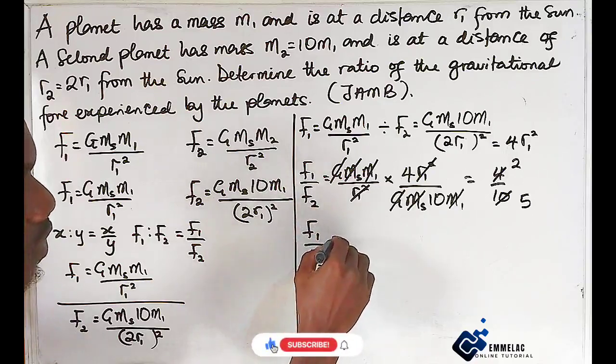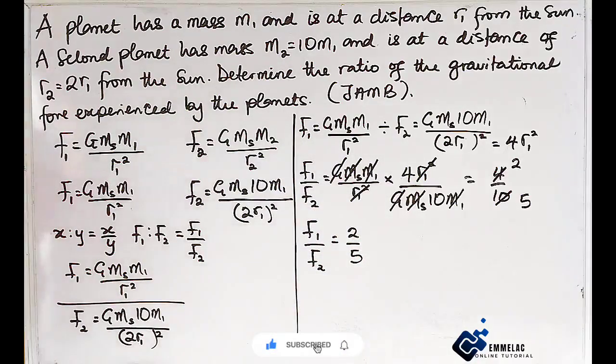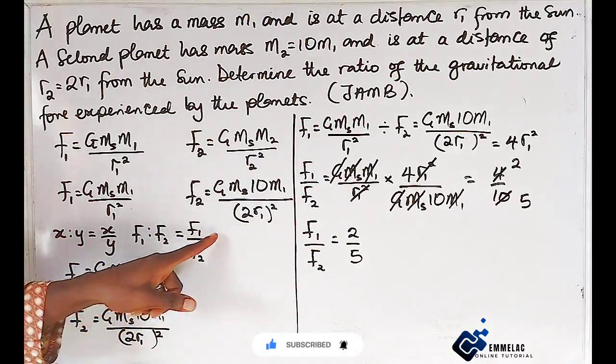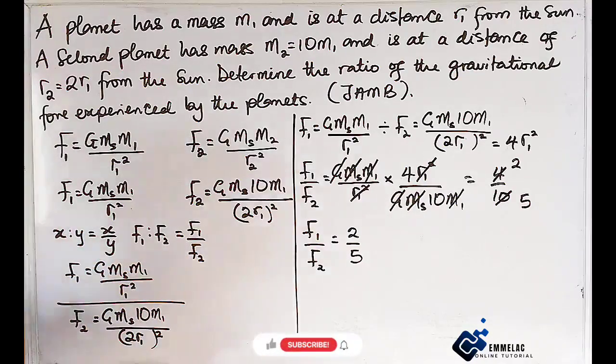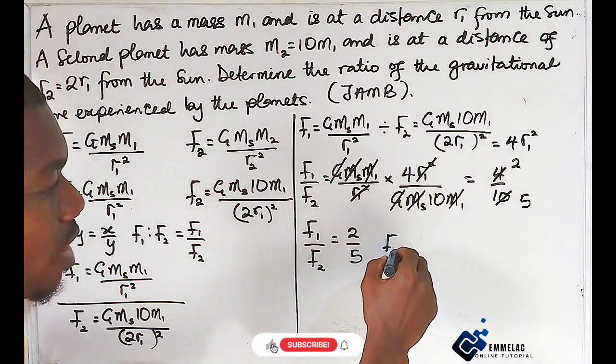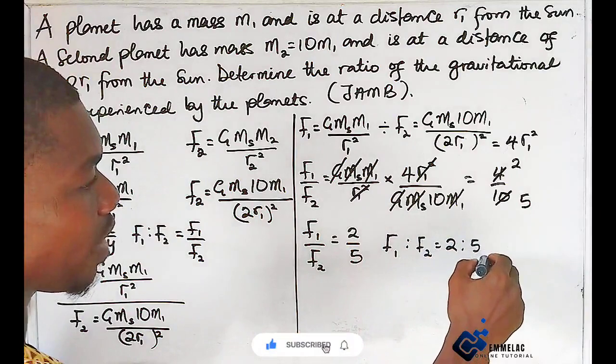Take note that the fraction can be likened to ratio, so we can see that F1 ratio F2 equals 2 ratio 5.